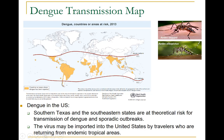In the U.S., southern Texas and southeastern states are at theoretical risk for transmission of dengue and sporadic outbreaks. The virus may be imported into the United States by travelers returning from endemic tropical areas, and that is how we have seen some cases of dengue viral disease in the U.S.